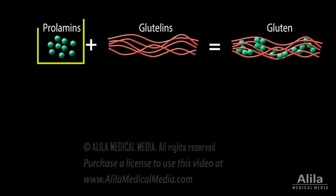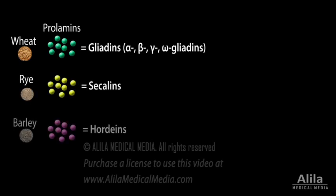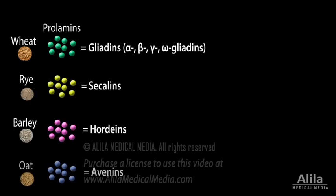Prolimins are of most clinical significance when it comes to gluten-related disorders. In wheat, they are called gliadin. Proteins similar to gliadin exist in rye, barley, oat, and their derivatives.